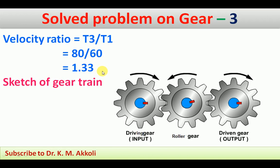In this numerical, we also have to sketch the gear train. It is a simple gear train, and each shaft has one gear, so three gears are present. This first gear is the driving gear — the input. The middle one is the roller gear, or intermediate gear. And this last one is the driven gear.